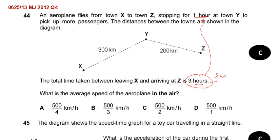So 300 plus 200 is 500 divided by 2. This will be the average speed of the aeroplane. Option C is the right answer.